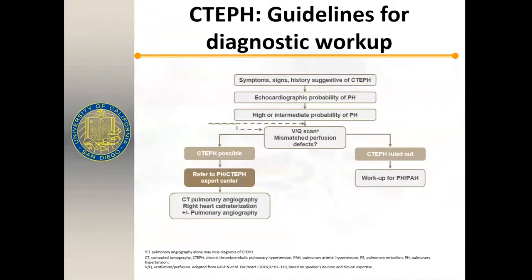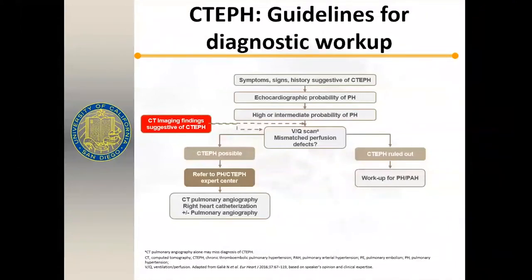The diagnostic workup guidelines: we develop a suspicion from symptoms, examine the patient, and consider pulmonary hypertension. We do an echocardiogram to look for right ventricular enlargement, then typically a VQ scan. Nowadays, a lot of CT imaging is done before a VQ scan. There are distinct features on CT that suggest chronic thromboembolic disease. If the VQ scan is completely normal, you can rule out CTEPH. If it shows mismatched perfusion defects, you must consider CTEPH and refer to a PH or CTEPH center with expertise.